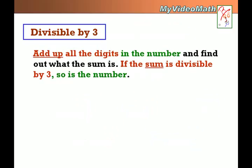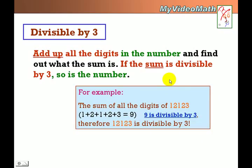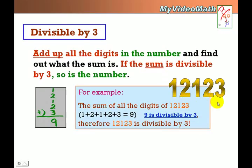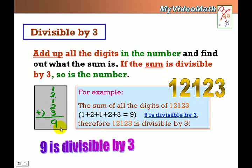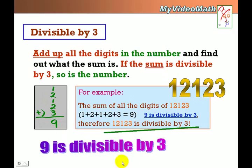Divisible by 3. If we add up all the digits in a number and the sum is divisible by 3, so is the number. For instance, take 12123. We add all the digits up: 1+2+1+2+3. The sum is 9. 9 is divisible by 3. Therefore 12123 is divisible by 3.